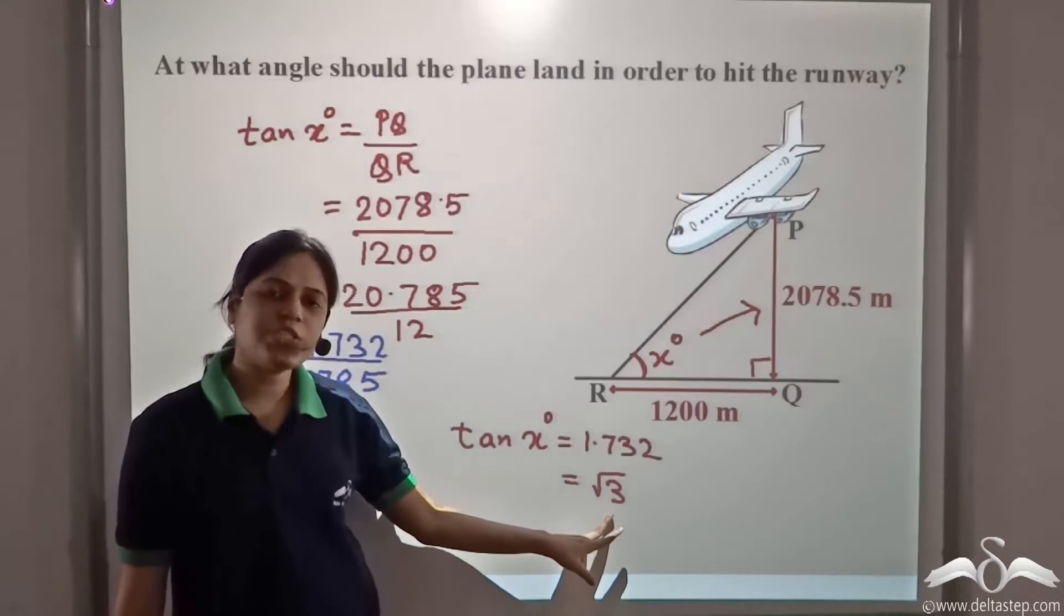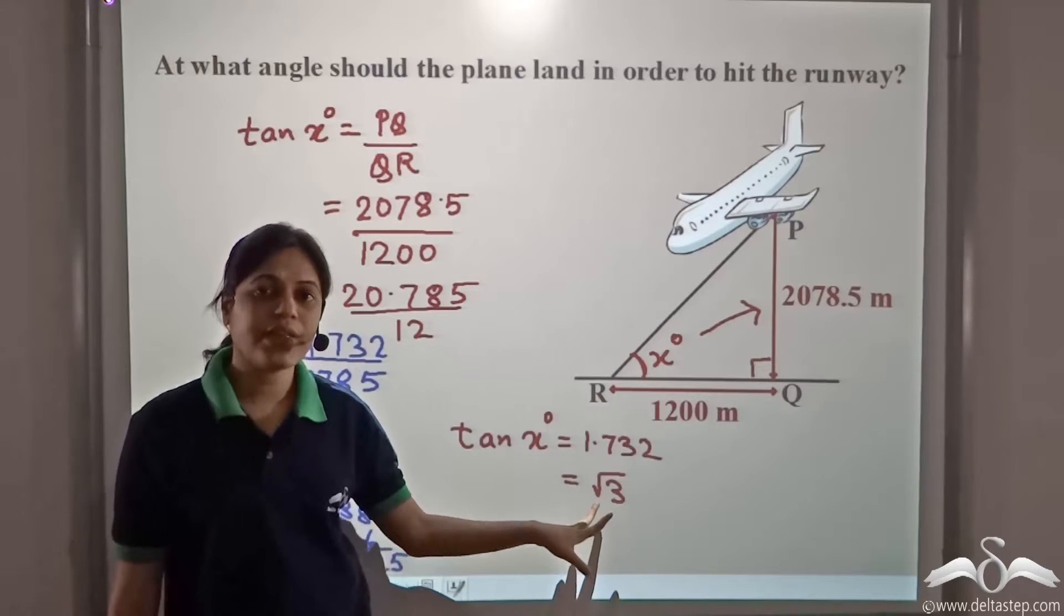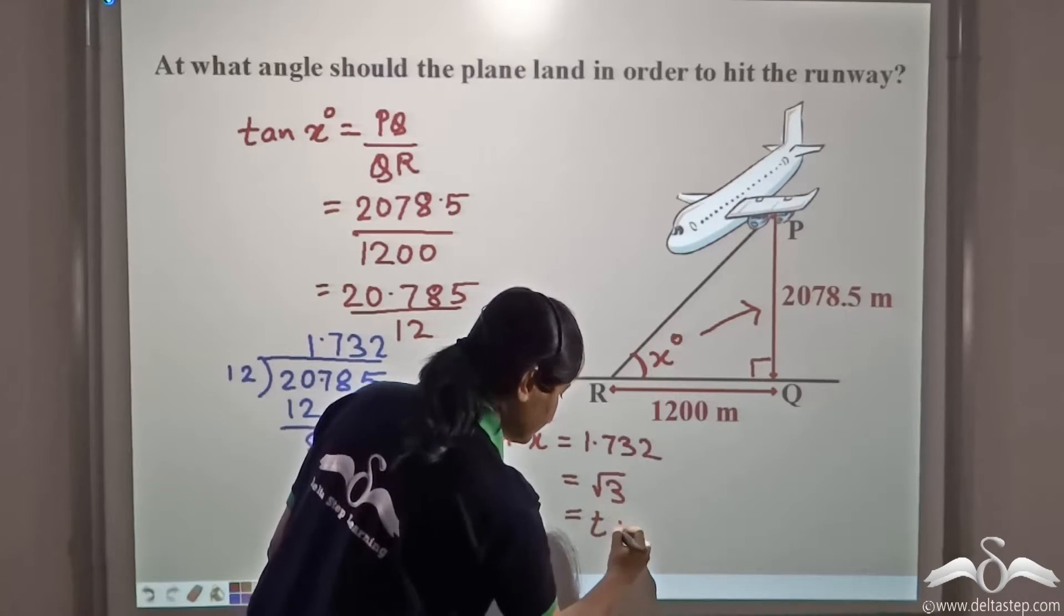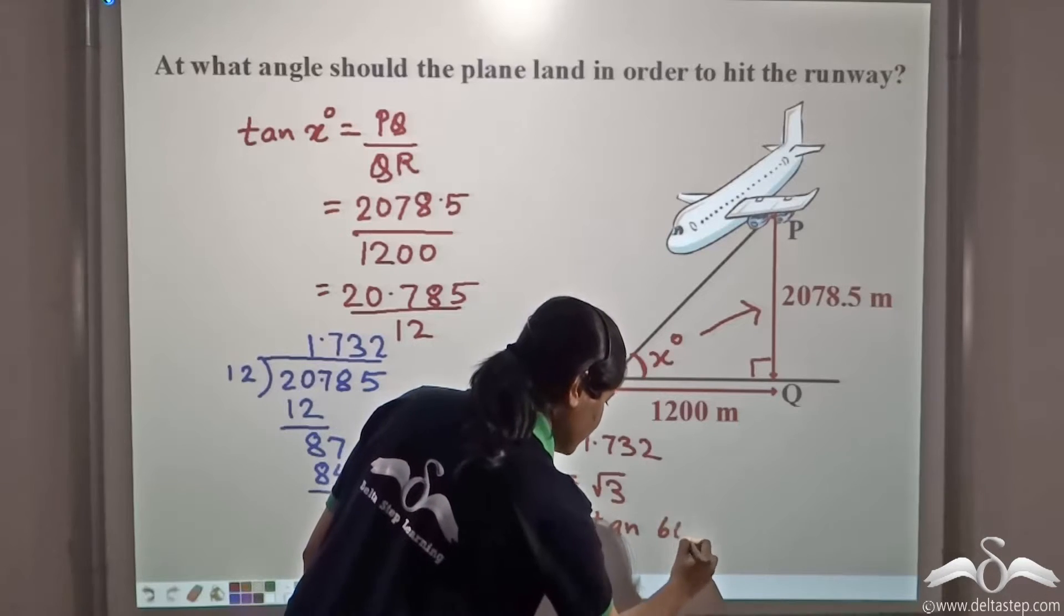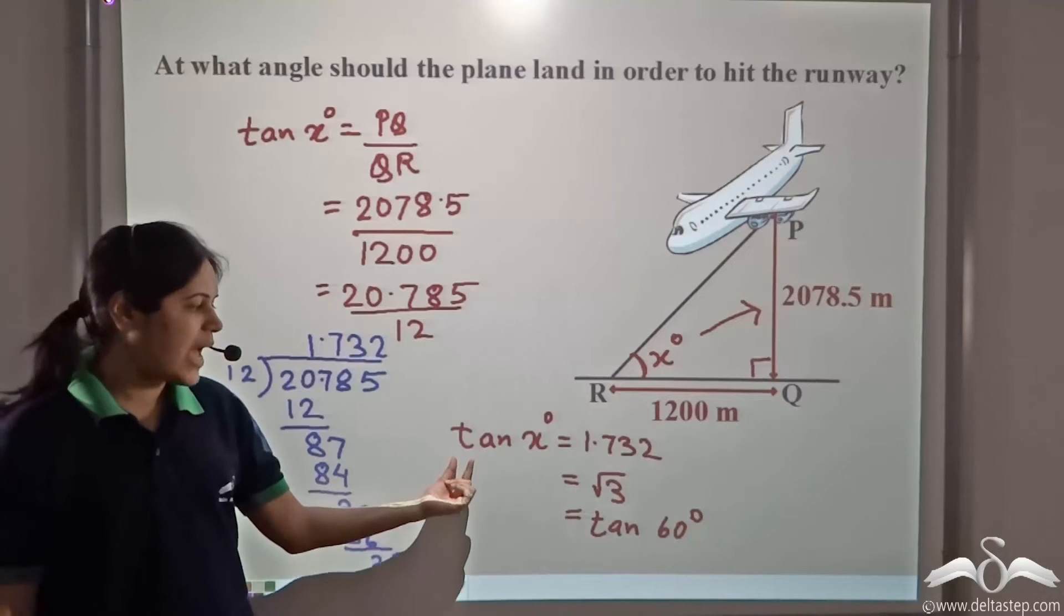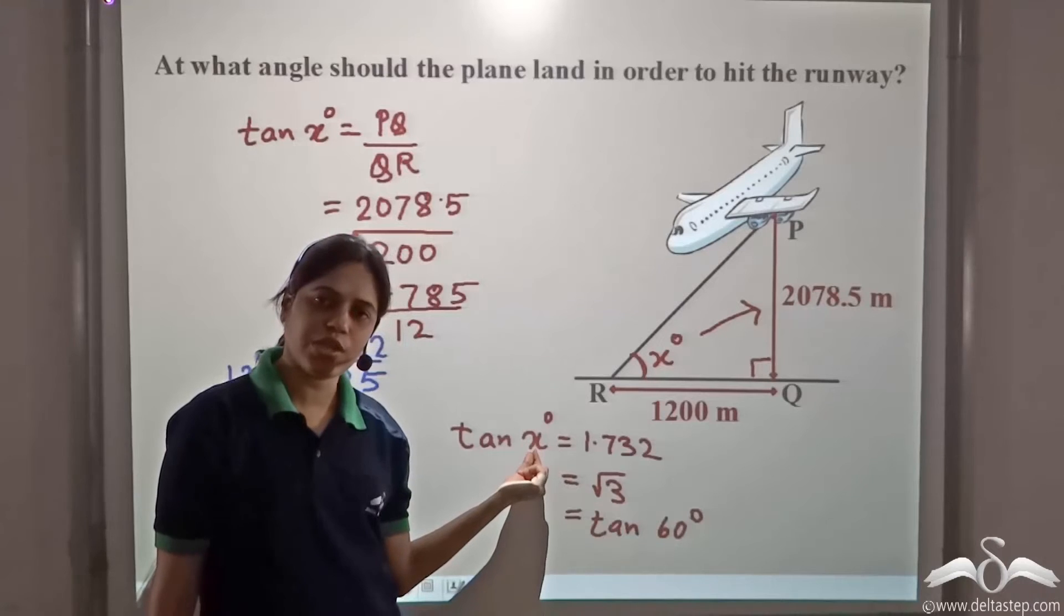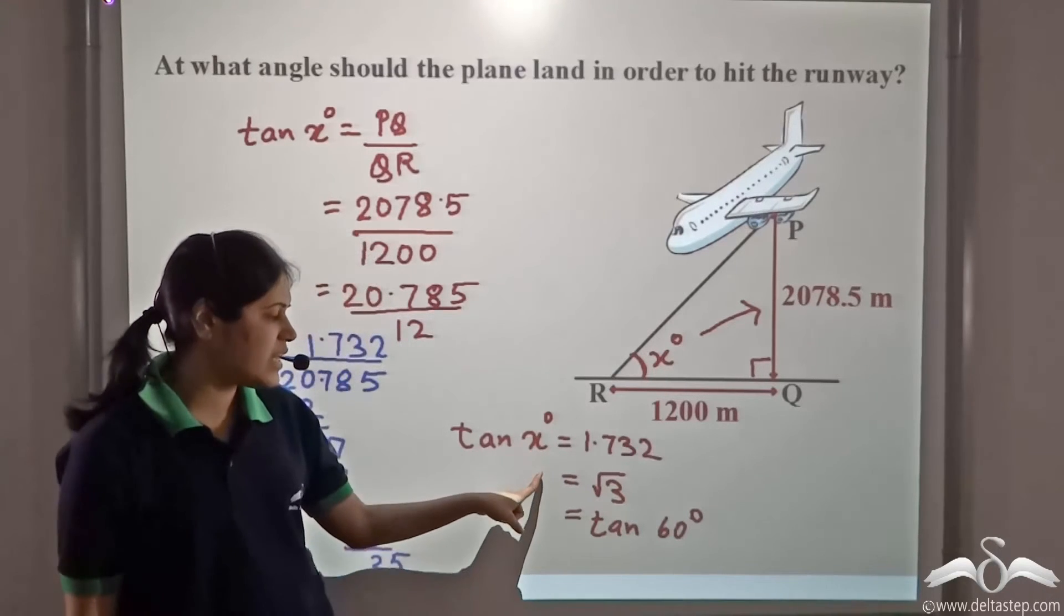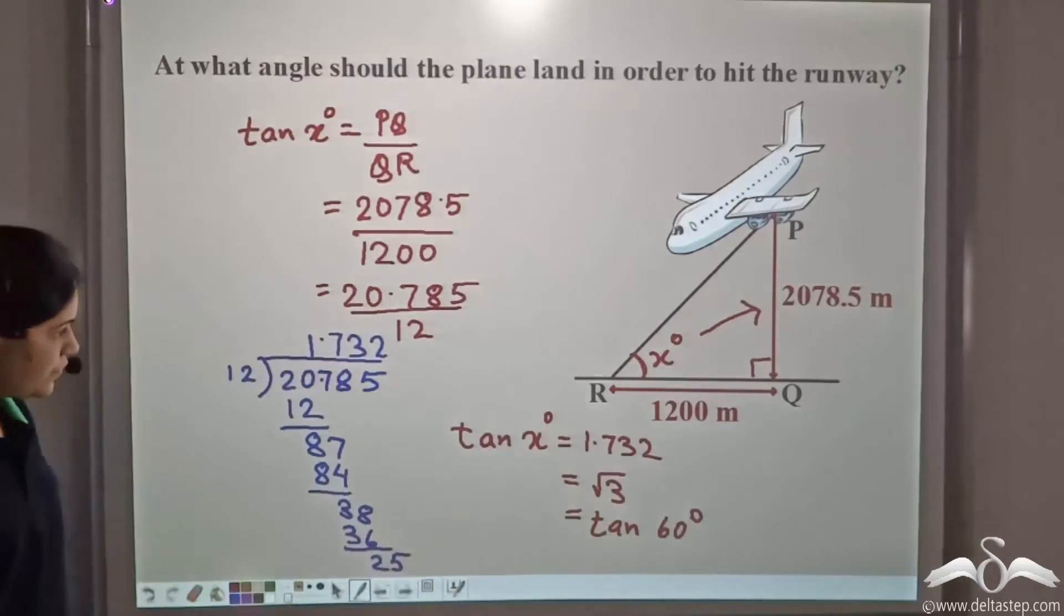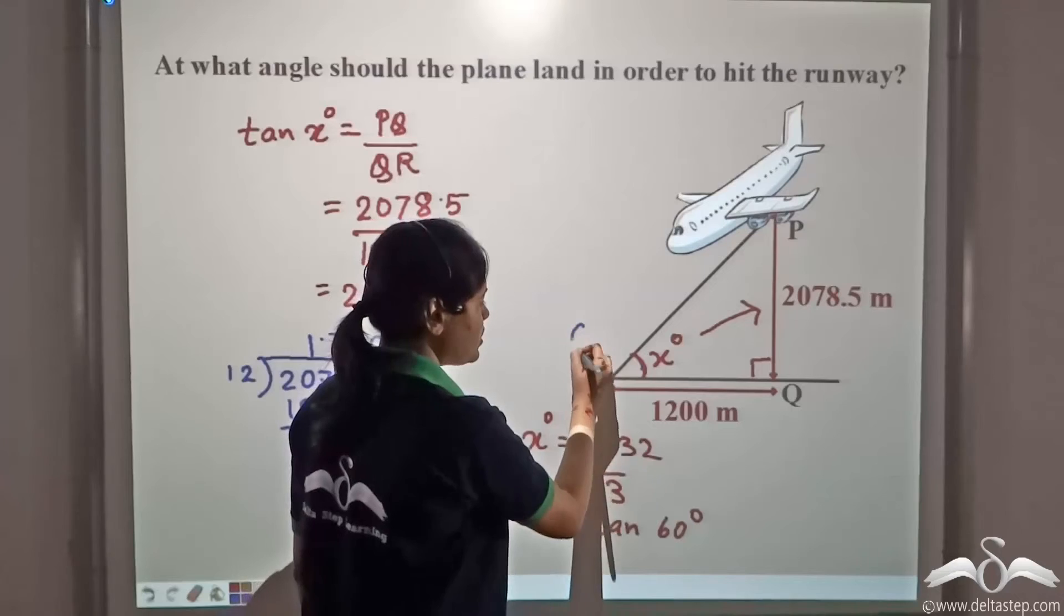Root three corresponds to which value of tan? Recall that root three is equal to tan sixty degree. Tan of sixty degree is root three. So, we can say that x is equal to sixty degree. That is, this angle is equal to sixty degree.